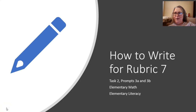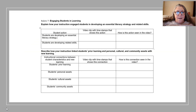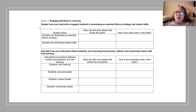Good evening. We're going to be looking at how to write for rubric 7 — that's task 2, prompts 3a and 3b — for elementary math, elementary literacy, and most secondary ed content areas. One of the first things you need to do before you begin to write for task 2 is plan for it. Whenever you are creating your lesson plans for the edTPA, you should be looking ahead at task 2 and task 3 to find out what types of things are required.